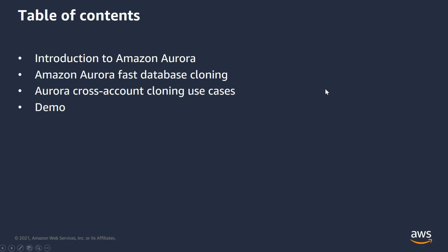Let's quickly go through the agenda for today's session. We'll talk about Amazon Aurora features and its architecture. Next, we will dive deep into Amazon Aurora fast clone feature and see how cross-account cloning works. We'll discuss some use cases for this solution and also look at a quick demo to see how to share Aurora clones with another AWS account. Let's start with an introduction to Amazon Aurora.